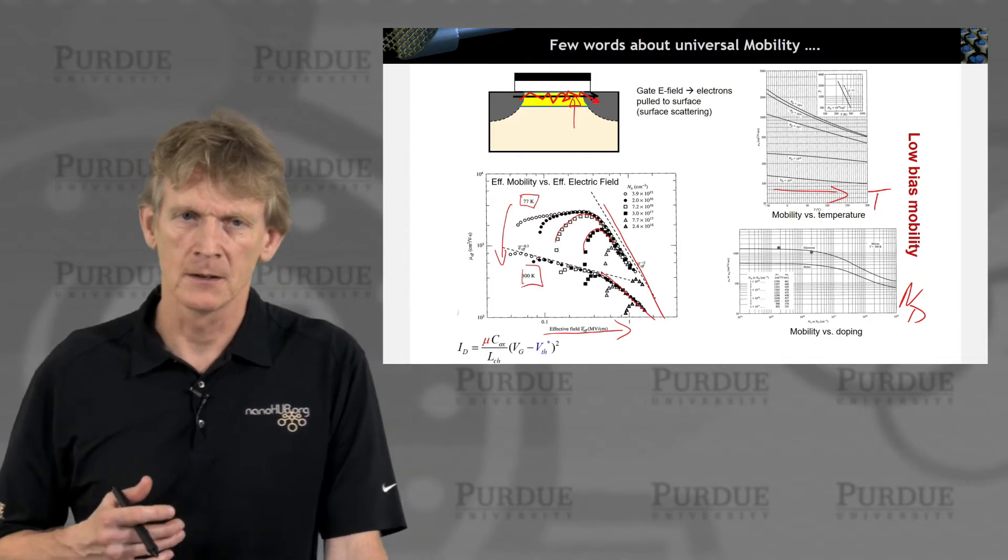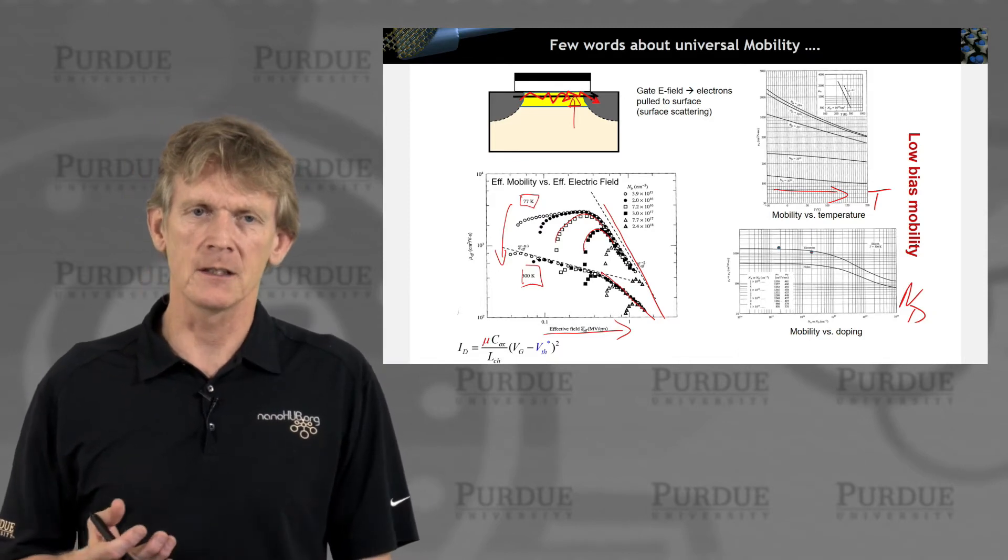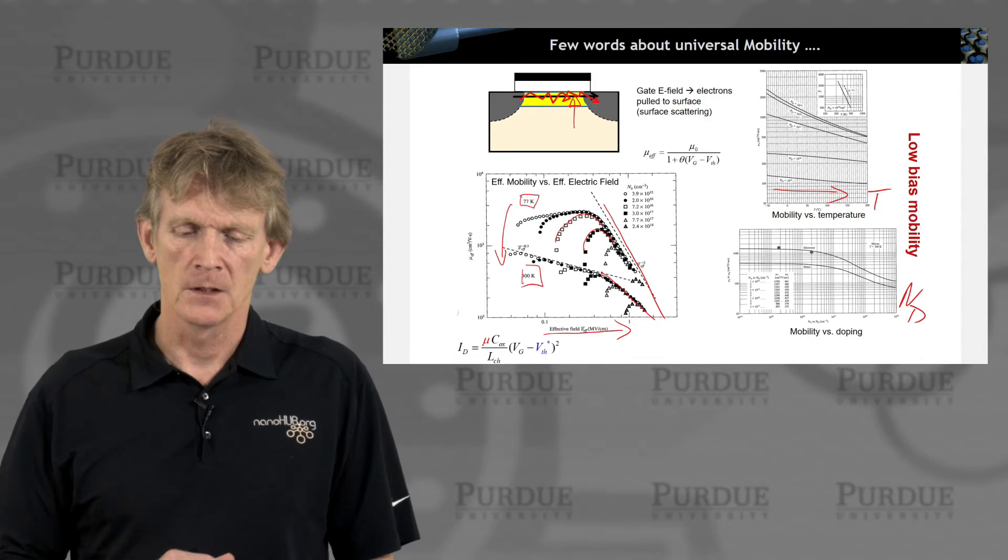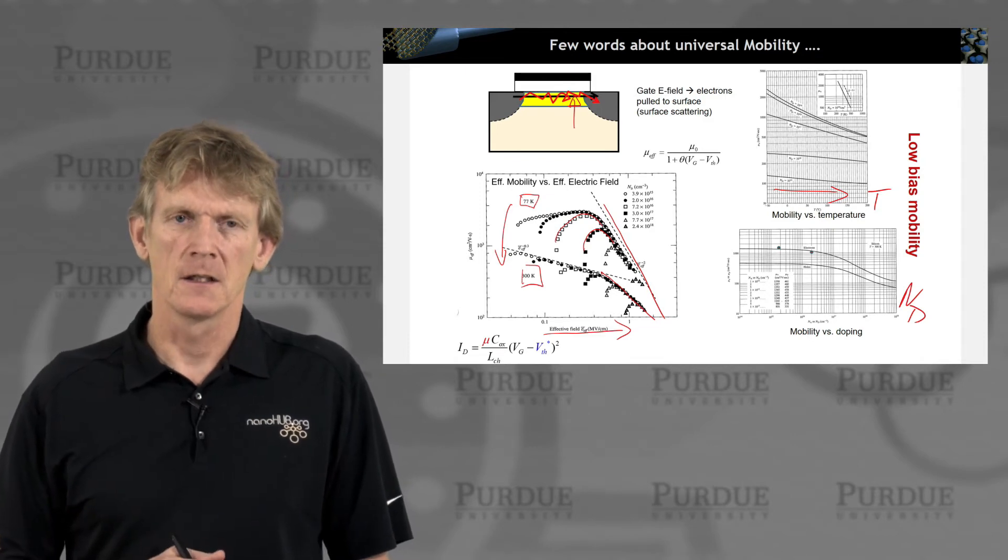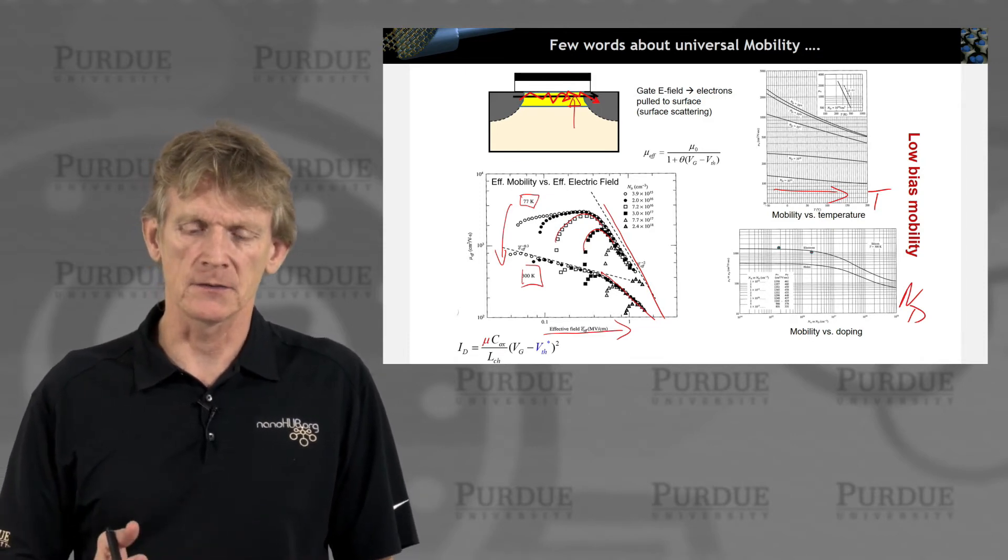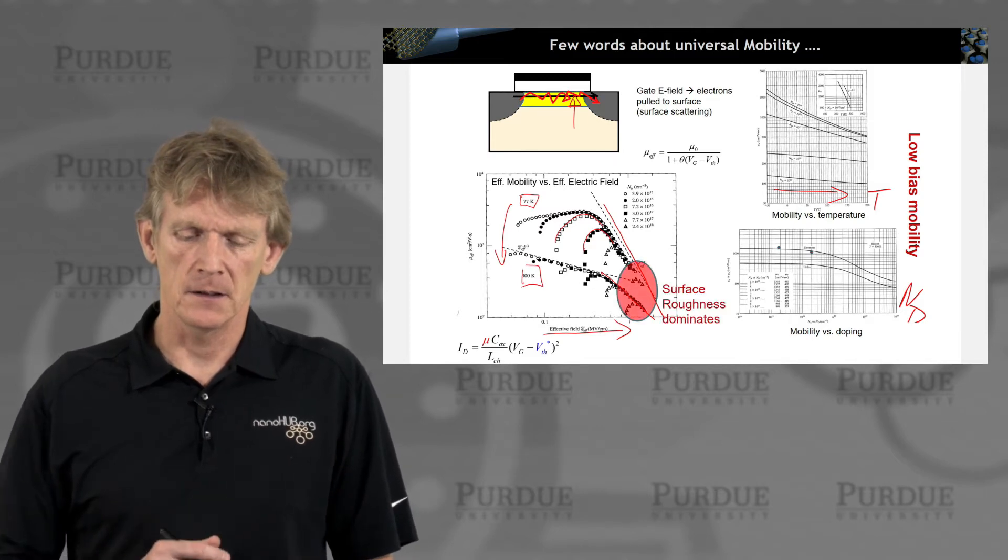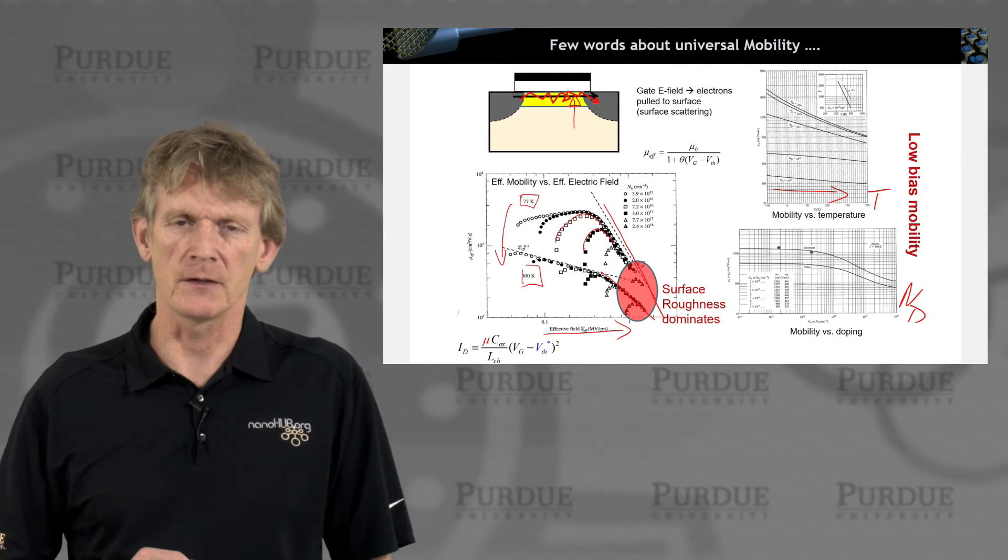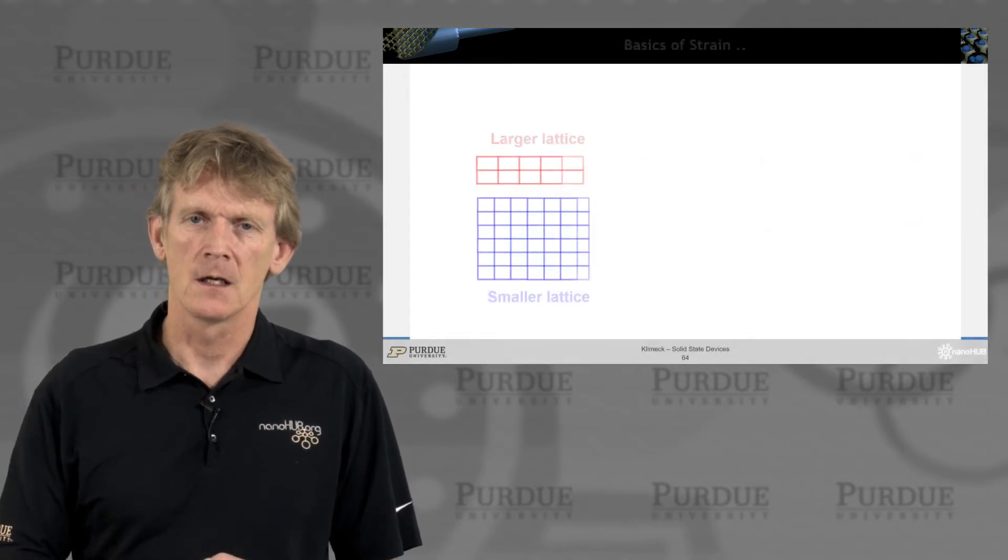But this is called the universal mobility curve, and at high electric fields at the gate region, surface roughness scattering is becoming a dominant mechanism. And remember Matisson's rule, we add those inverse mobilities, we add the rates. So you can come up with an effective mobility model that works like this. And down here, for a large electric field, you have a surface roughness being dominant.